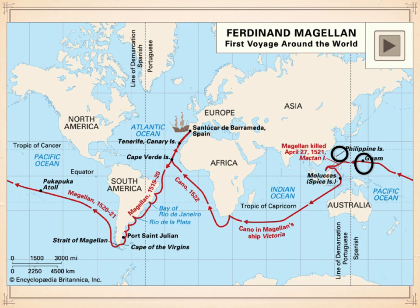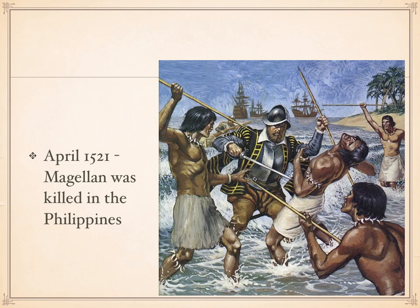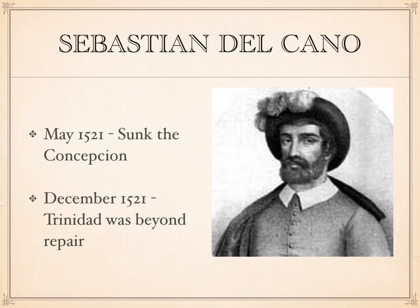It was in the Philippines that Magellan attempted to convert the local chief to Christianity, promising that if the chief converted he would help him in a war with a neighboring island. Magellan was killed in the fighting in April 1521. He was replaced as captain by Sebastian Elcano, who took control of the expedition. With not enough men to sail three ships, they sank the Concepcion in May 1521 in the Philippines.